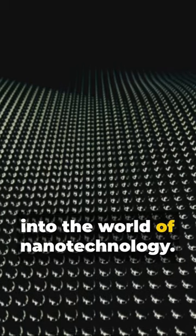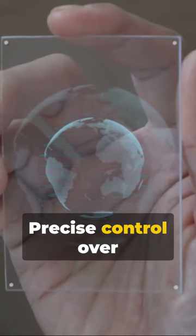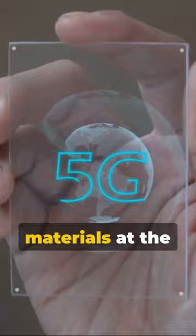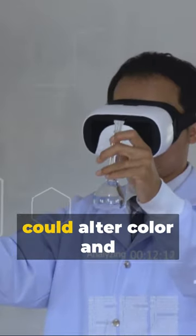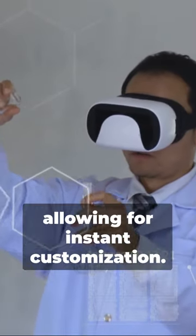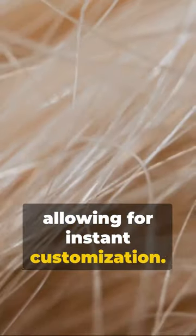Now, delve deeper into the world of nanotechnology. Precise control over the structure and properties of materials at the nanoscale could result in nanoparticles embedded in wig fibers. These tiny particles could alter color and texture on command, allowing for instant customization.